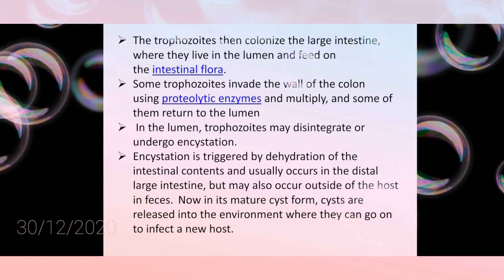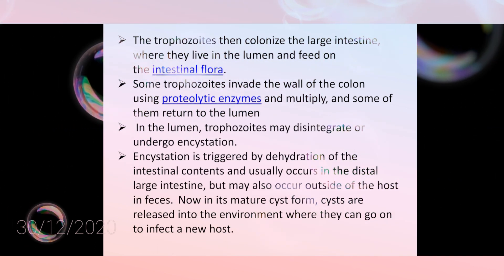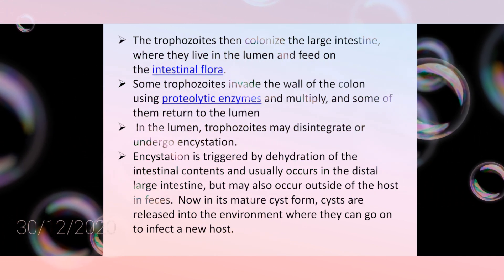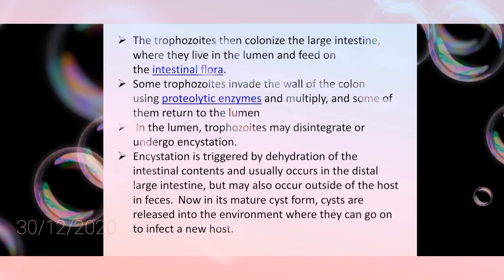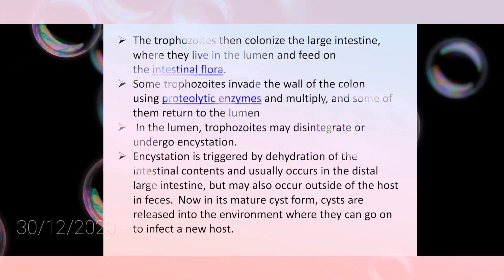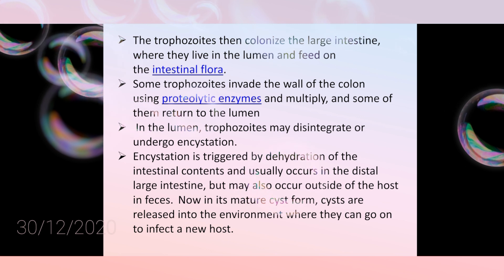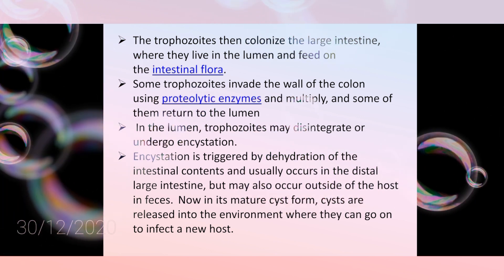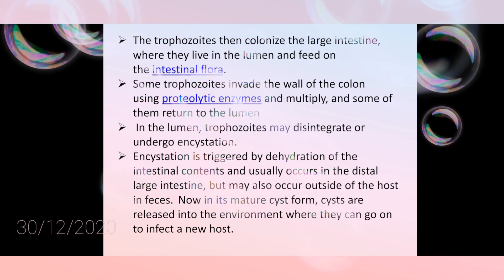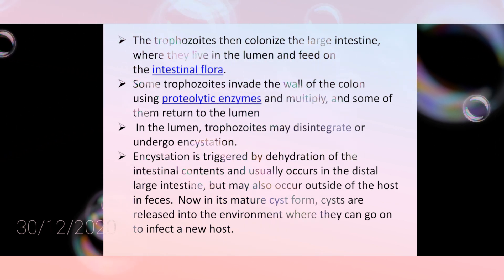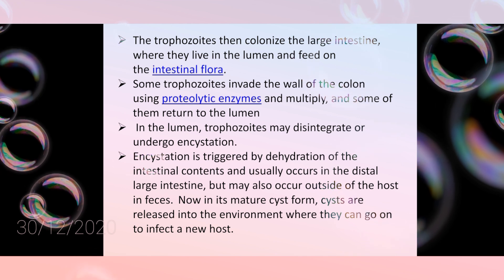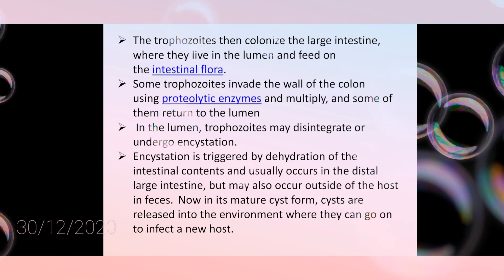In the lumen, trophozoites may disintegrate or undergo encystation. Encystation is triggered by dehydration of intestinal contents and usually occurs in the distal large intestine, but may also occur outside the host in feces. In mature cyst form, cysts are released into the environment where they can go on to infect a new host.